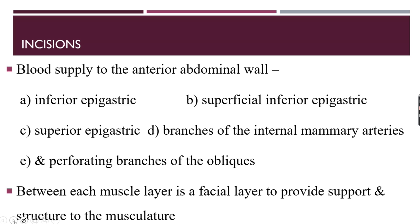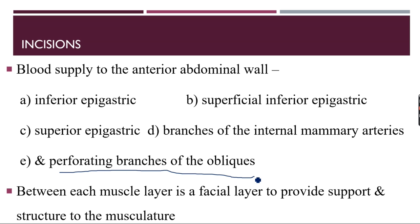Broadly speaking, for the anterior abdominal wall we must consider five groups of blood supply: the inferior epigastric artery along with the superficial inferior epigastric artery, the superior epigastric artery, the branches of the internal mammary arteries in the midline, and the various perforating branches of the obliques — external and internal. Between each muscle layer there is a fascial layer that provides support and structure to the musculature.